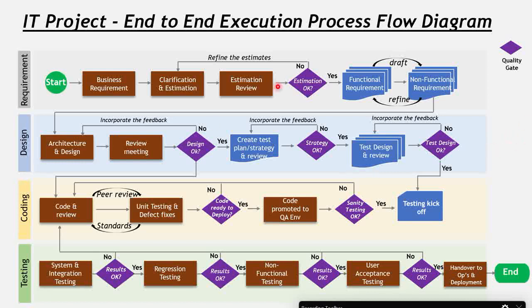Let's start. The whole process flow diagram is divided into four stages: one is requirement, second is design, third is coding, and fourth is testing. I have created this for a waterfall methodology. If you want to create one for agile, there will be little tweaks to it. I have another video coming in the next few days where I'll be creating a process flow diagram for agile as well. For now, in this video I'm going to cover this waterfall methodology end-to-end process flow diagram.